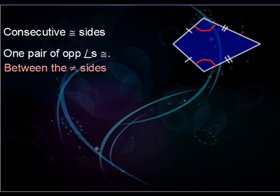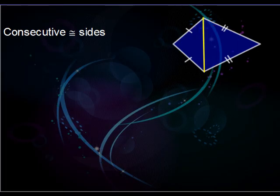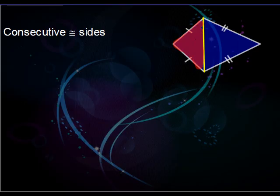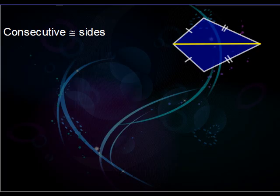If we draw one diagonal, you'll notice it separates the kite into two triangles. A quick question: are these two triangles congruent — do they have the same side lengths and angle measures? Definitely doesn't look like it. However, if we draw the diagonal the other way, you can see that both triangles are congruent by SSS — side, side, side.